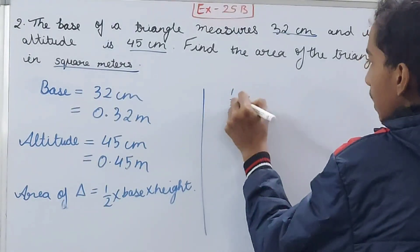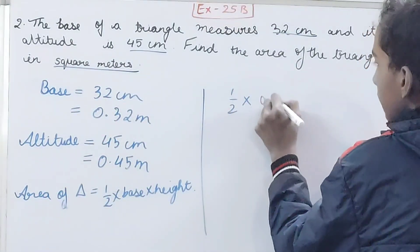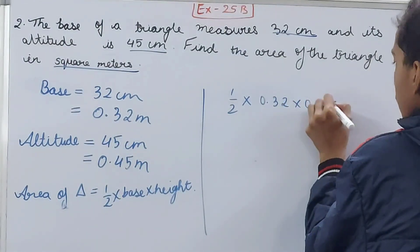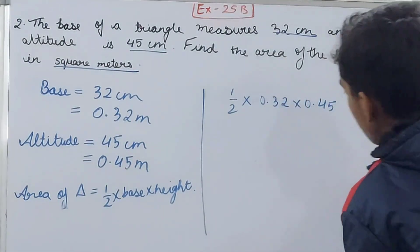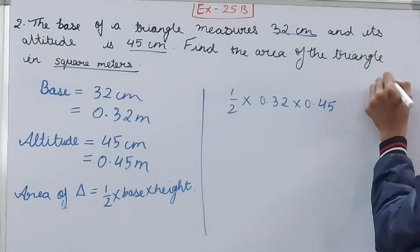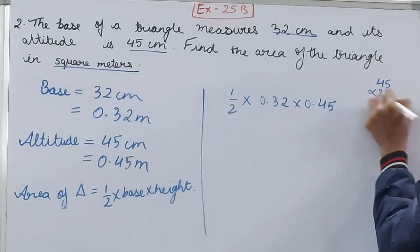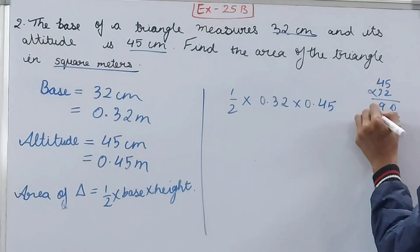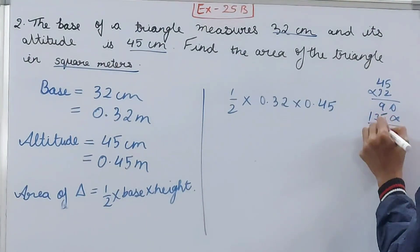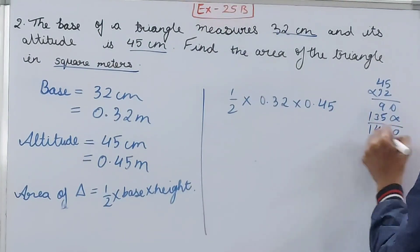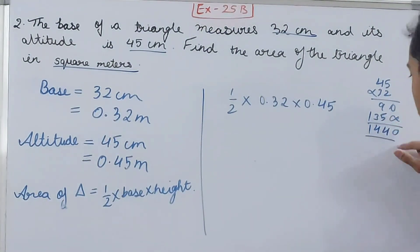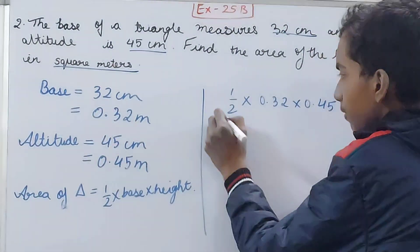1/2 × 0.32 × 0.45. Let's quickly multiply 32 and 45. Multiplying: 32 × 5 gives 160, then 32 × 4 shifted gives 1280. Adding these together: 160 + 1280 = 1440. So we have 1/2 ×